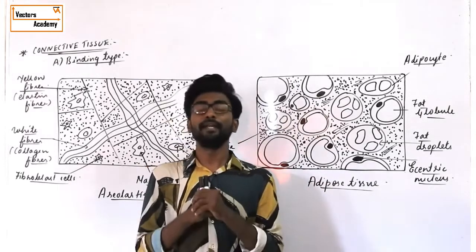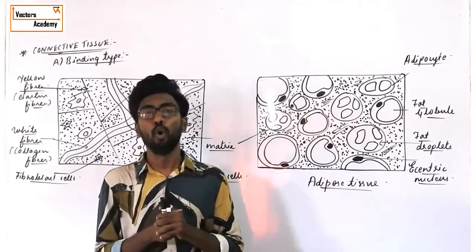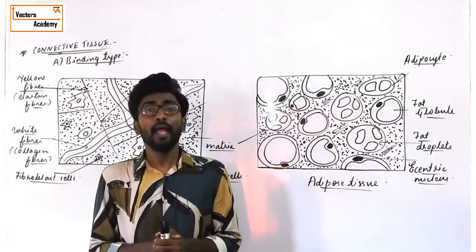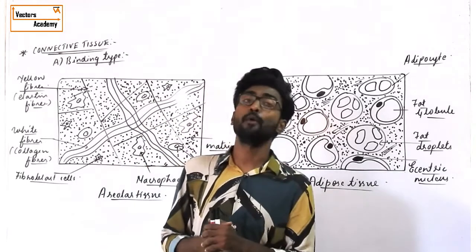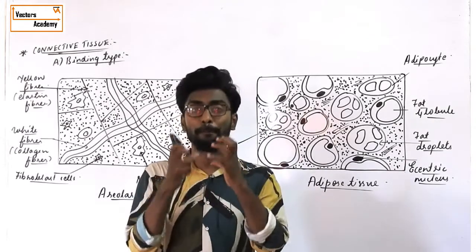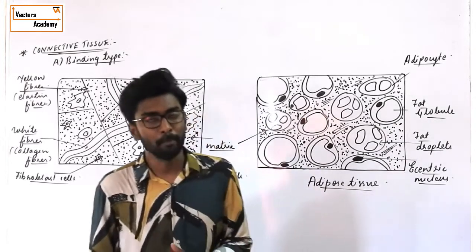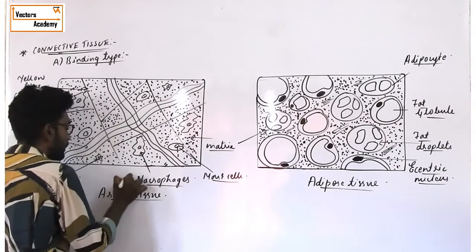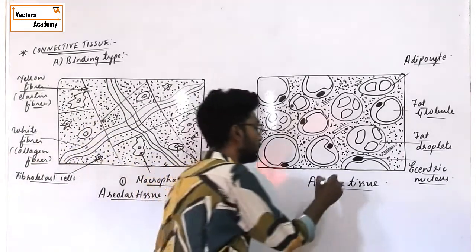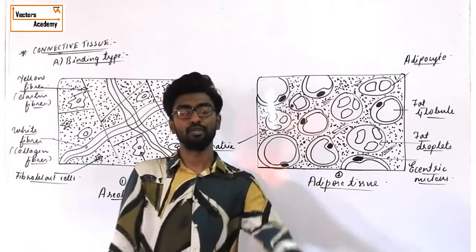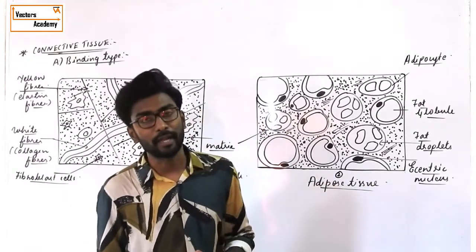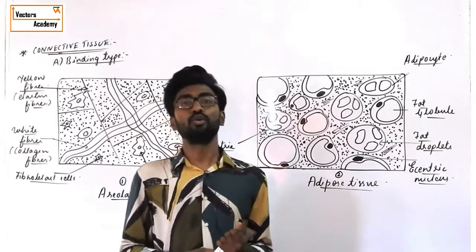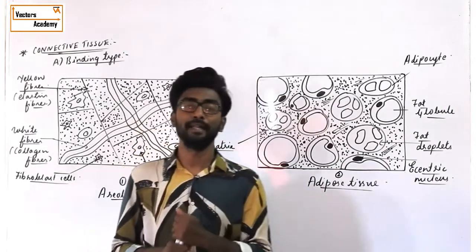Binding type tissue holds or binds the other parts or organs of the body. Supporting tissue is a type of tissue which supports the entire skeletal system of the body. Binding tissue is of two types: areolar connective tissue and adipose connective tissue. Supporting type is divided into cartilage and bone. Today we are going to study only the binding type of tissue.